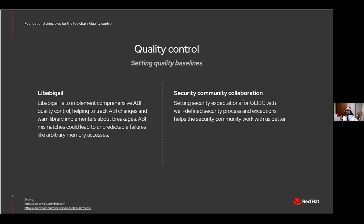LibAbigail is a project whose entire purpose is to serialize ABI artifacts, compare ABI artifacts, and say from release to release — when I have a compiled library, C or C++, what's its ABI, and has that ABI changed? That's important because there are a lot of security defects that deal with sizes of things changing. When sizes change, you get buffer overflows and reads of non-deterministic values.